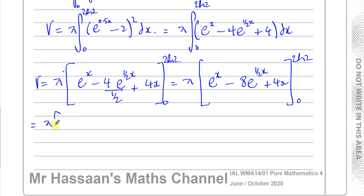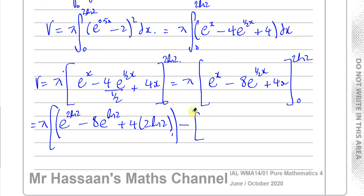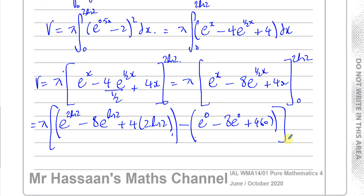Substituting x = 2 ln 2: we get e^(2 ln 2) minus 8 times e^(0.5 × 2 ln 2) which is e^(ln 2), plus 4 times 2 ln 2. Then we subtract the expression at x = 0: e^0 minus 8 e^0 plus 4 times 0, which gives 1 minus 8 plus 0. Be careful — putting 0 in does not make everything zero, since e^0 = 1.